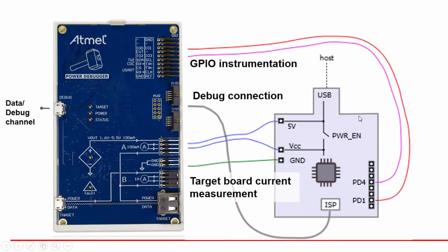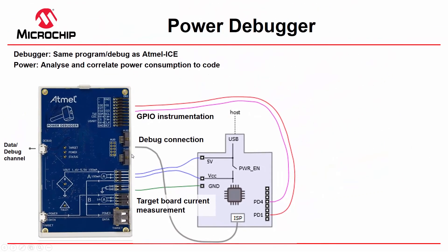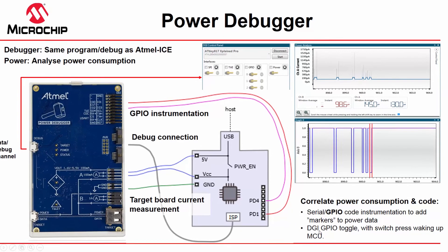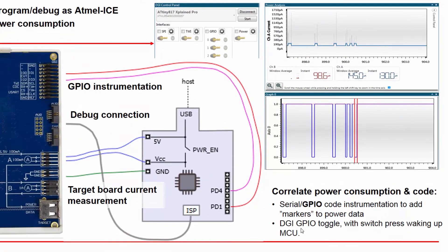If we have a target such as this board here, which looks like an Xplained Mini, we can make some connections to measure the board's power consumption. We can still have a debug connection through to Atmel Studio, or a third-party IDE, and we can also have some GPIO instrumentation. For example, if we use the DGI GPIO, we are instrumenting the code to add markers for our power consumption, ensuring that we toggle the DGI GPIO along with the switch pressed. You can see that this correlates with the power consumption of the MCU waking up.